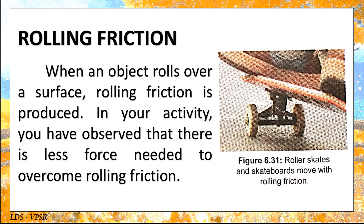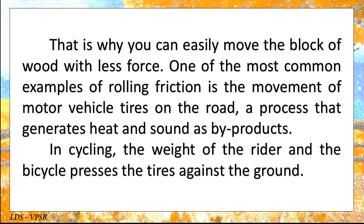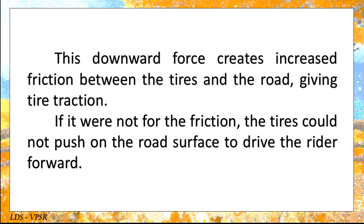Rolling friction: when an object rolls over a surface, rolling friction is reduced. You have observed that there is less force needed to overcome rolling friction. Roller skates and skateboards move with rolling friction, so you can easily move a block of wood with less force. One of the most common examples of rolling friction is the movement of motor vehicle tires on the road, a process that generates heat and sound as by-products. In cycling, the weight of the rider and the bicycle presses the tires against the ground. This downward force creates increased friction between the tires and the road, giving tire traction. If it were not for friction, the tires could not push the road surface to drive the rider forward.